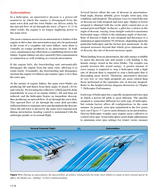Several factors affect the rate of descent in autorotation: bank angle, density altitude, gross weight, rotor RPM, trim condition, and airspeed. The primary ways to control rate of descent are with airspeed and rotor RPM. Higher or lower airspeed is obtained with the cyclic pitch control just as in normal powered flight. In theory, a pilot has a choice in the angle of descent, varying from straight vertical to maximum horizontal range, which is the minimum angle of descent.